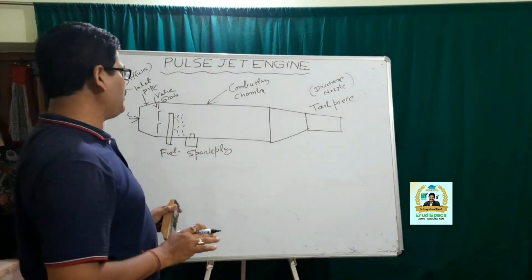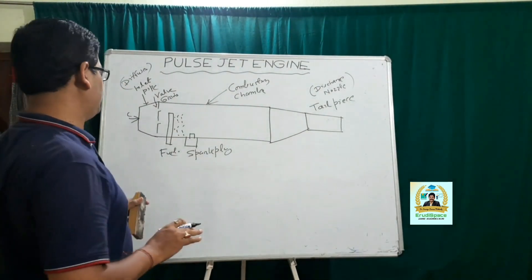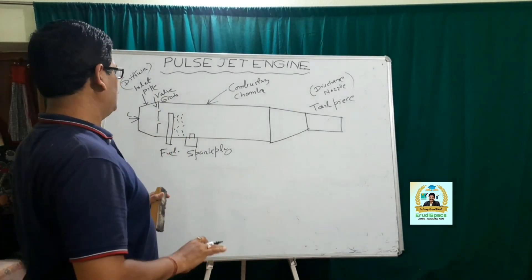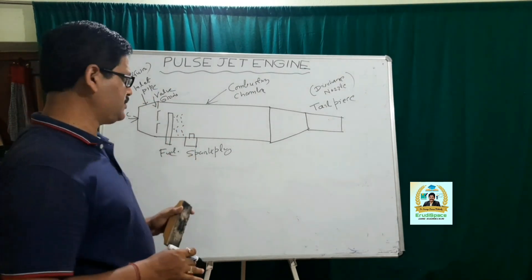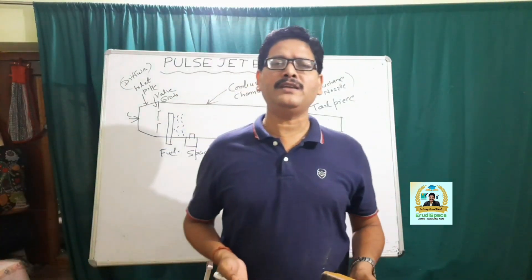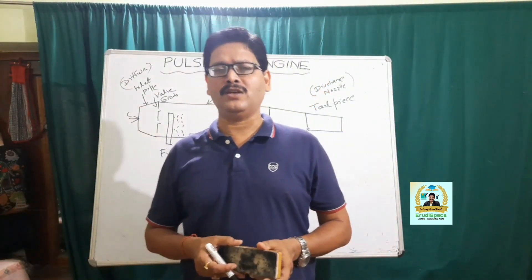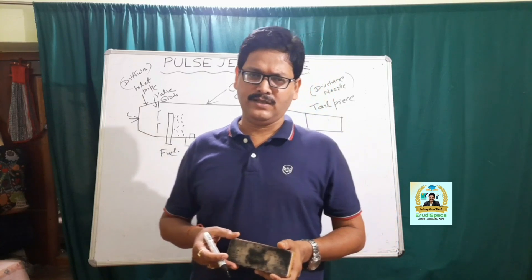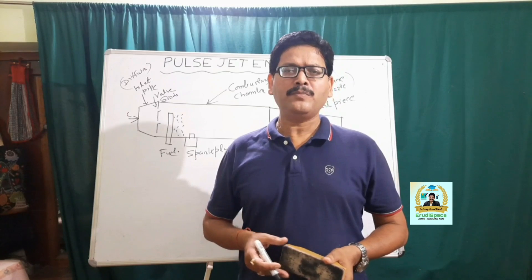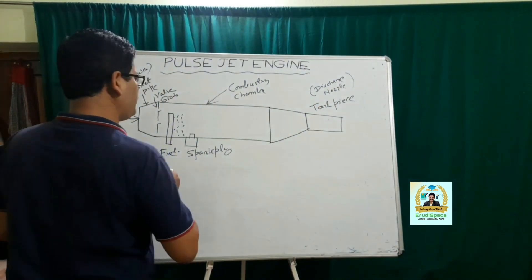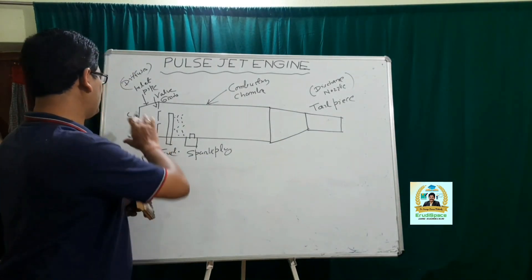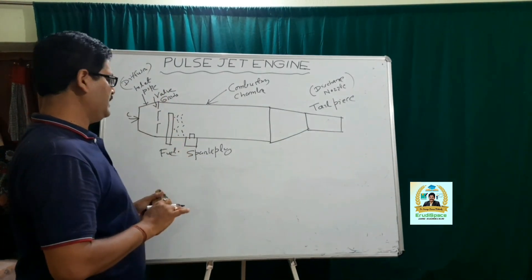Now we will see how it actually operates. First, air is drawn into the system through this inlet pipe, which is of course the diffuser. As we know, the diffuser is a smoothly varying section which converts kinetic energy into pressure energy.